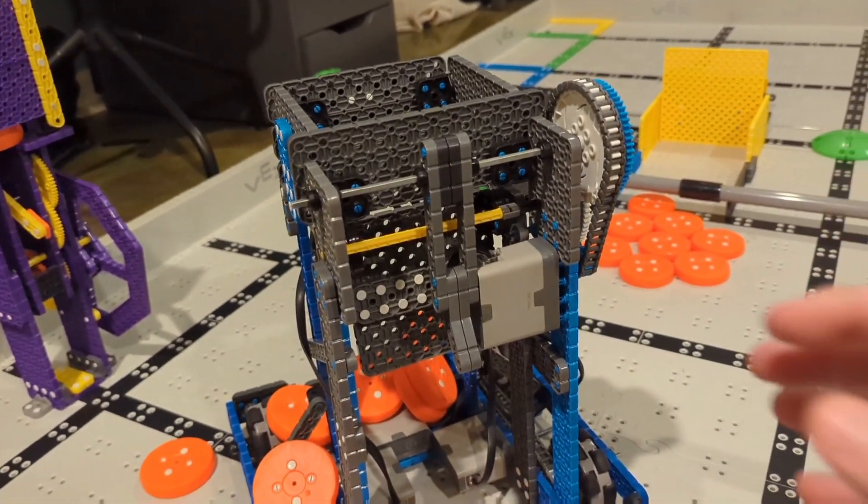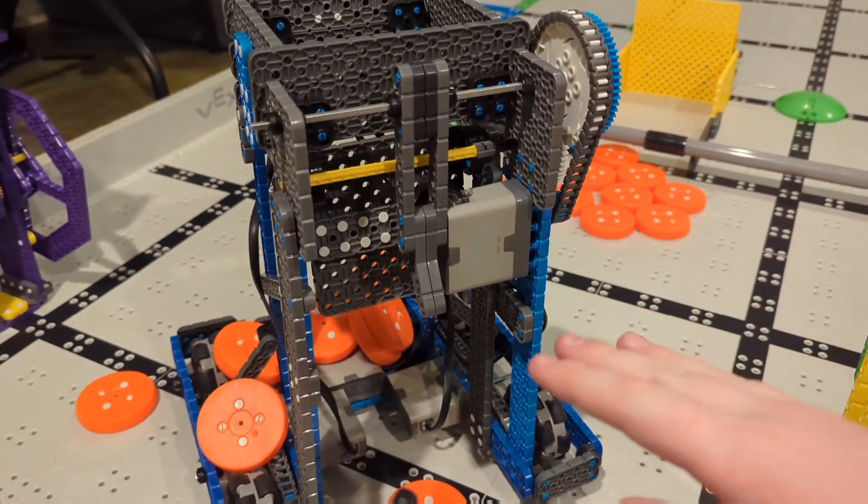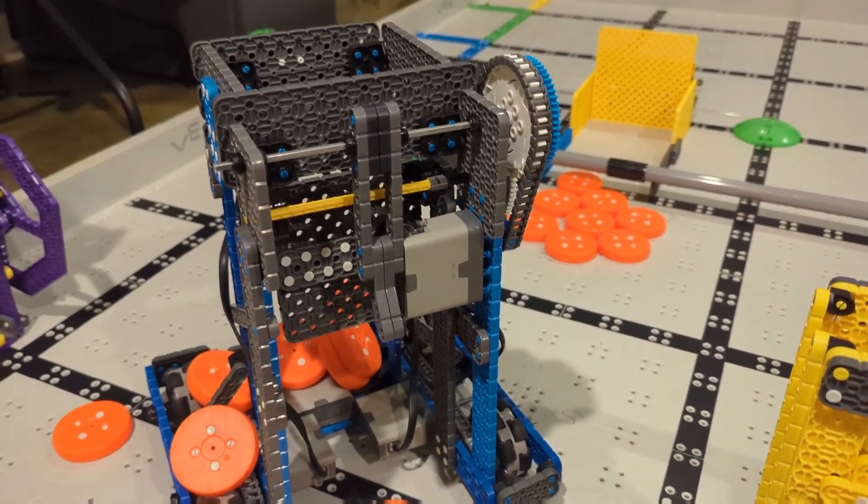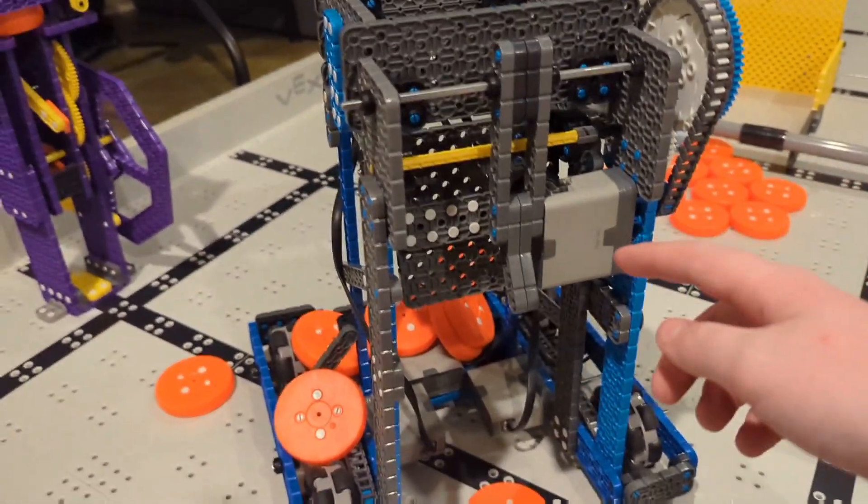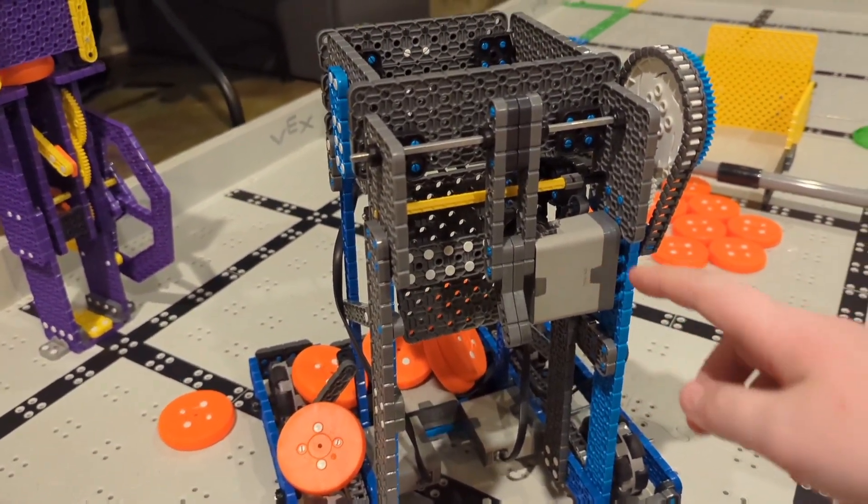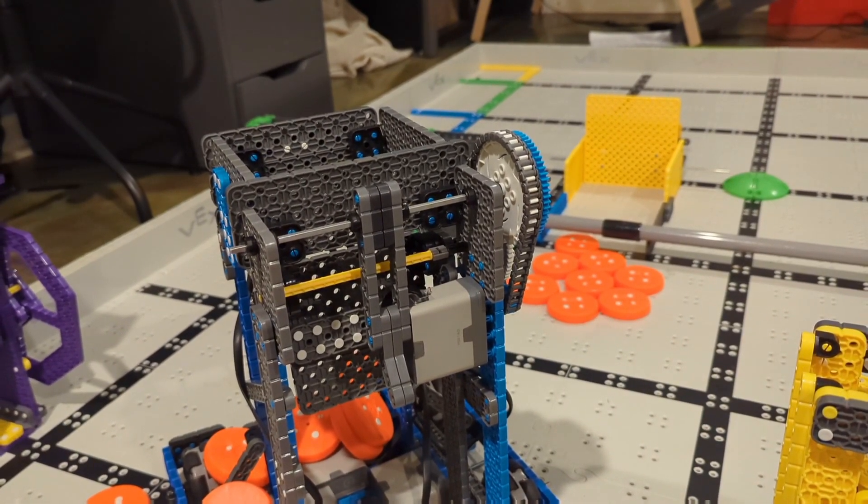Because when you start the match, it has to fit in the 9x15 area, and whenever the match starts, it can expand to be any length or width or height you want it to be. So you can just start with this down low, and then bring it back up when you need it. That way it's taking up less space for other mechanisms.